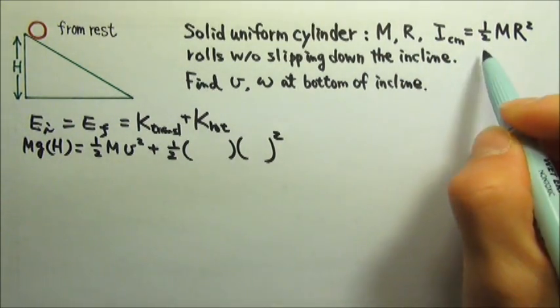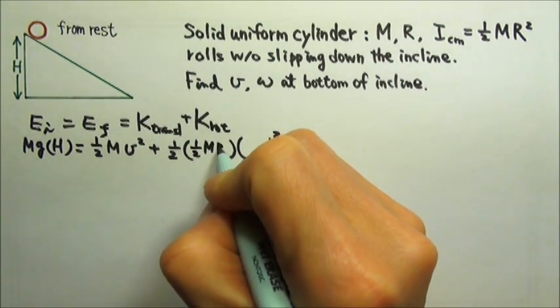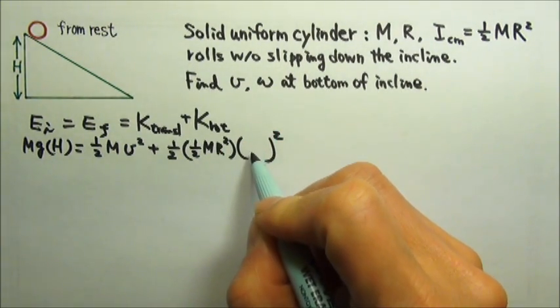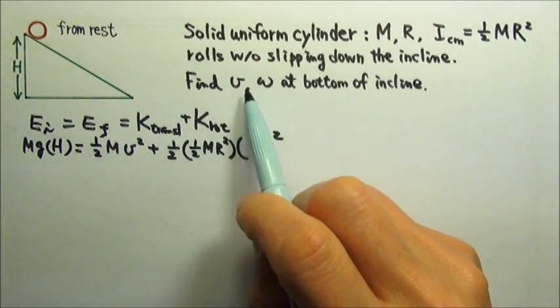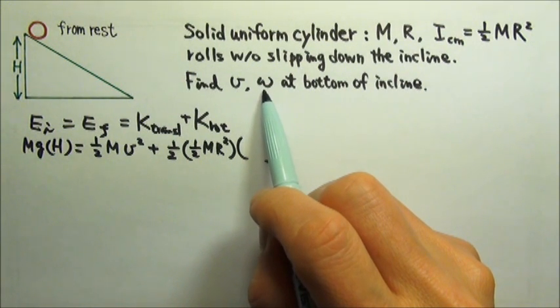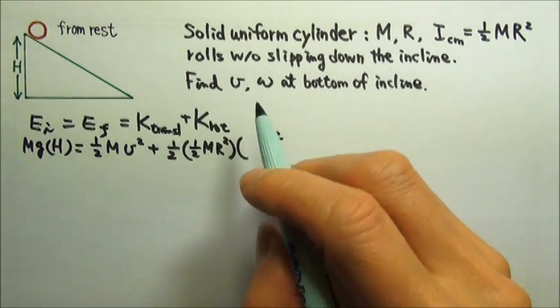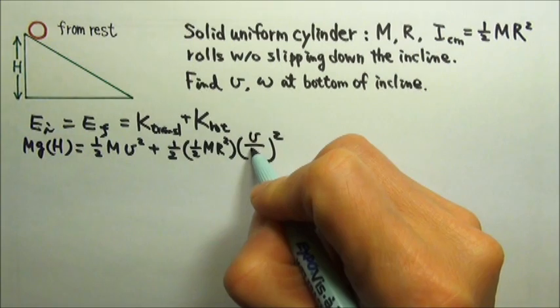We also have 1/2 Iω². What is the I? It's 1/2 mr². And because it's rolling without slipping, the v and ω, they are related. v is r times ω, which means we can replace ω with v over r.